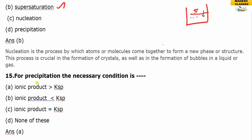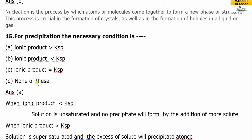For precipitation to occur, it is necessary that the ionic product of the salt is greater than its solubility product. The answer is A.